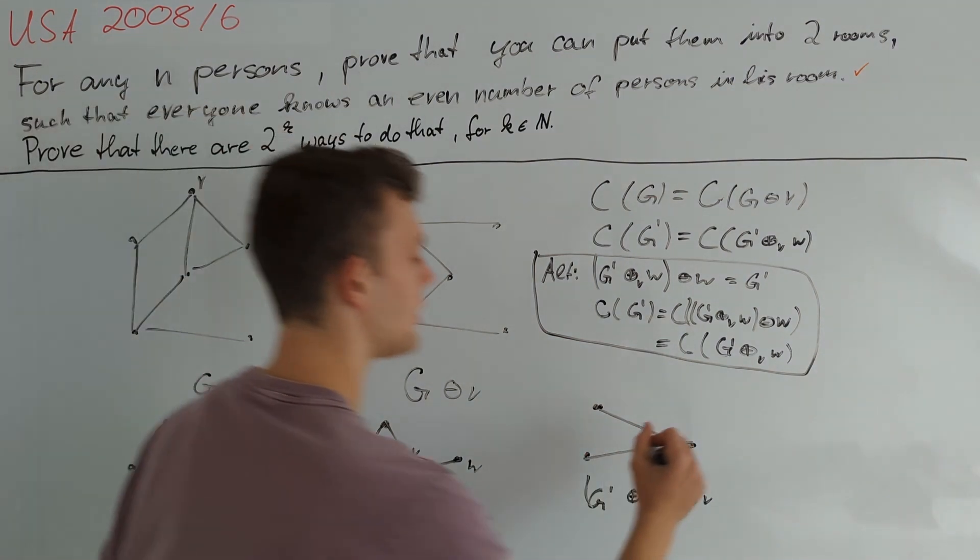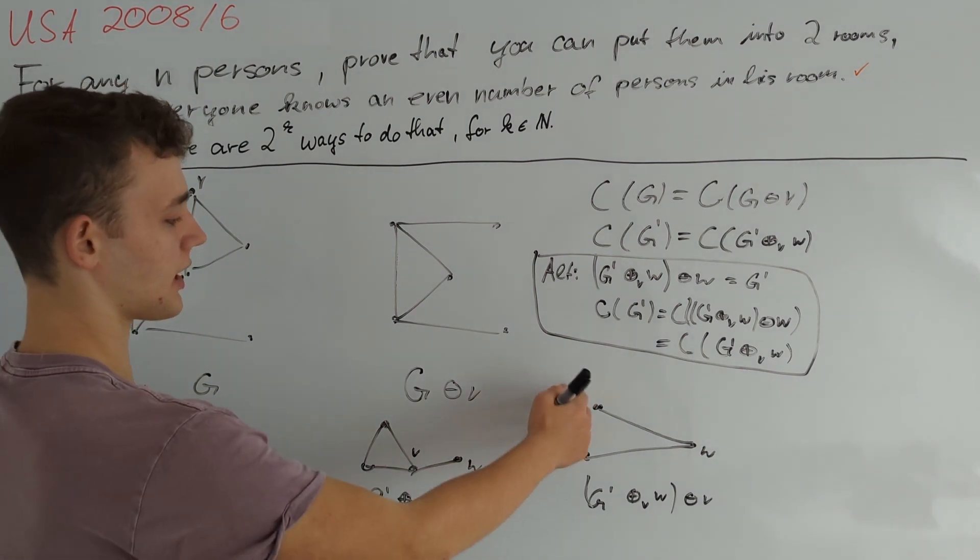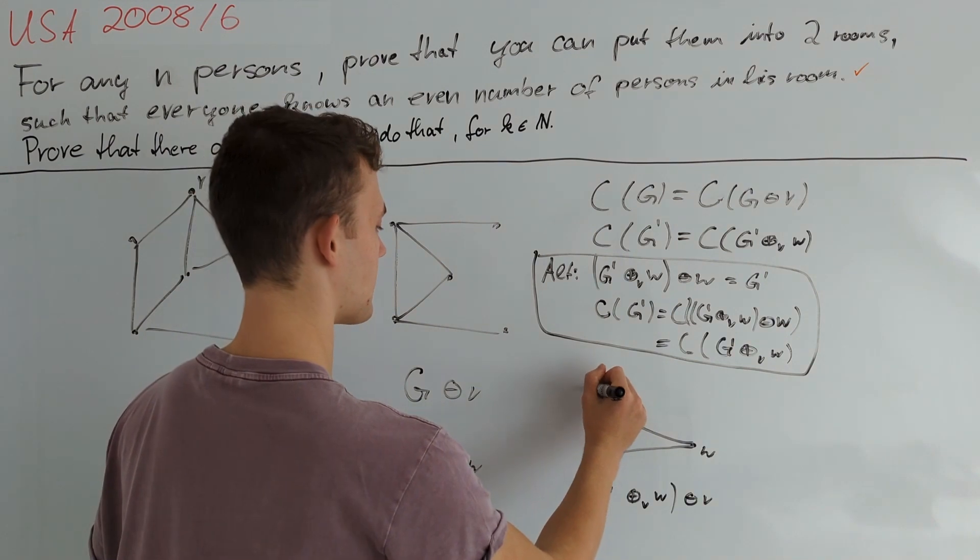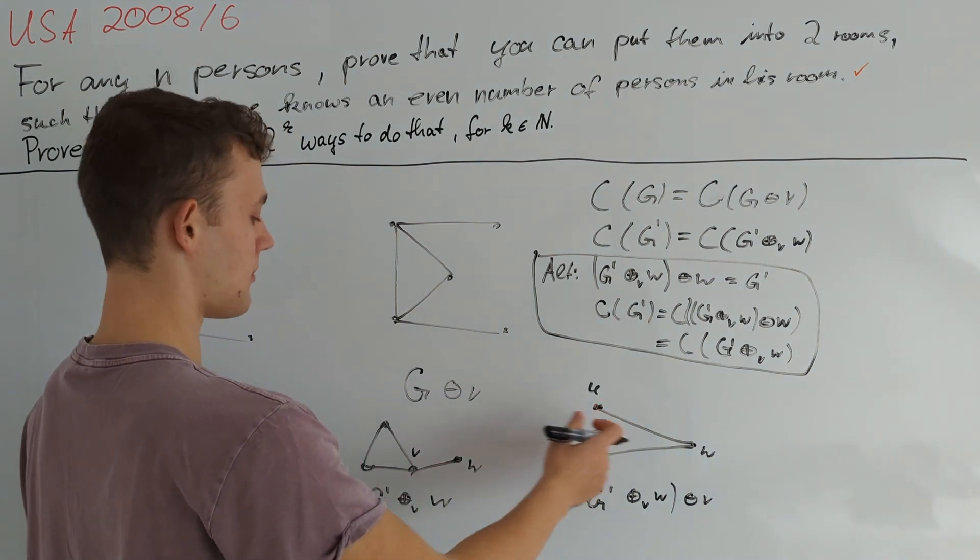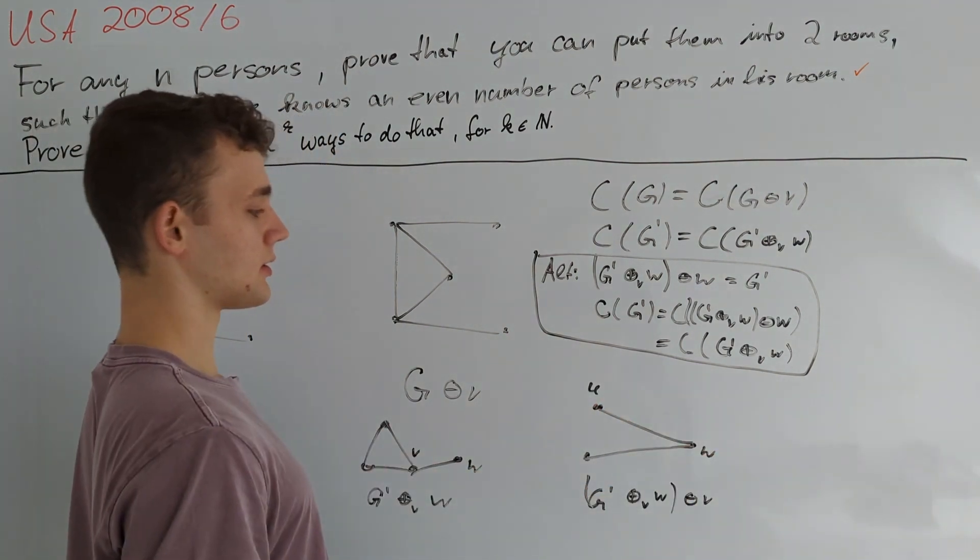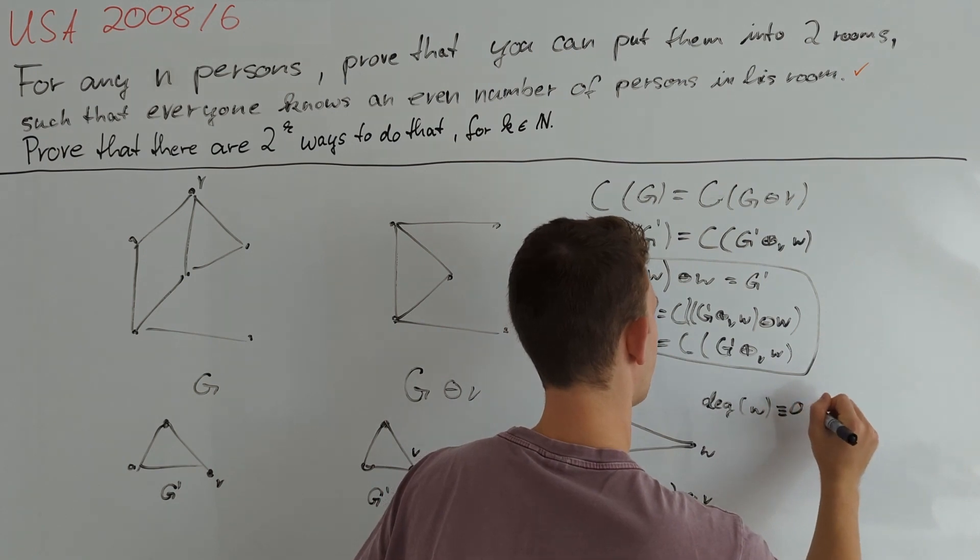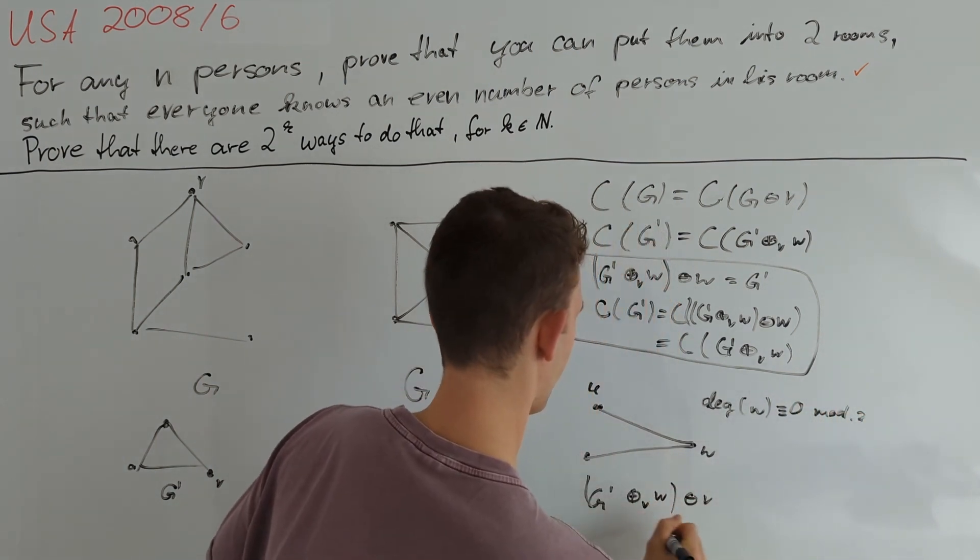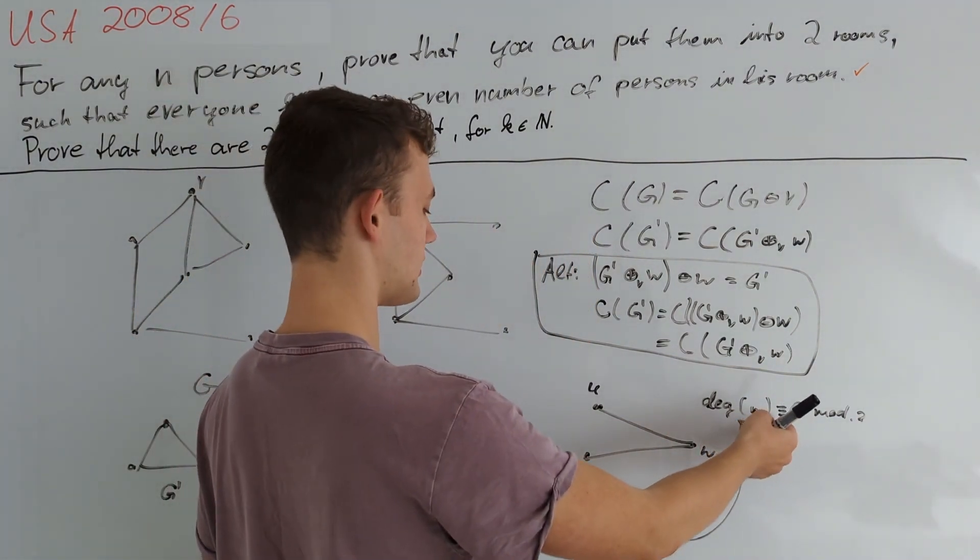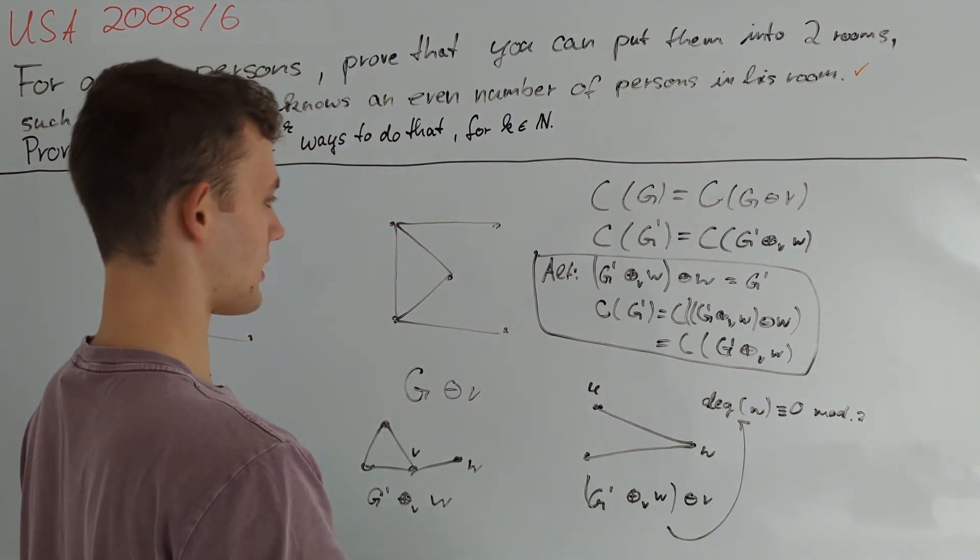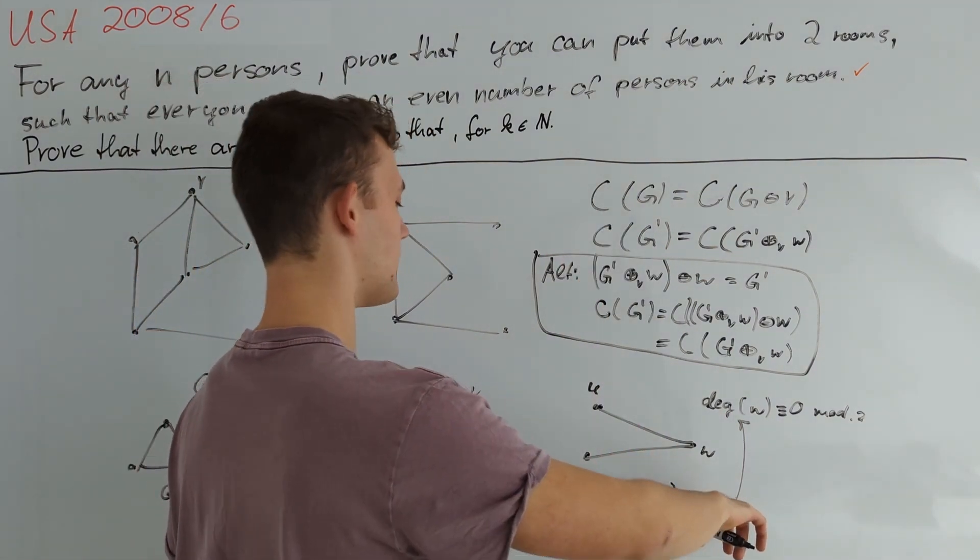So in any case W is now connected to all of the original neighbors of V in our graph G prime. So let's consider some neighbor U of V for instance. And W is connected to all of the neighbors of V but since V had even degree in G prime, W must also have even degree now. Of course that is with respect to this graph right here. So W would not be a suitable choice for another O minus operation because we have seen that C(G) is only invariant under that operation if the vertex that we O minus has odd degree.